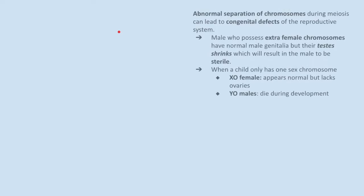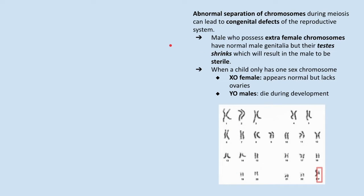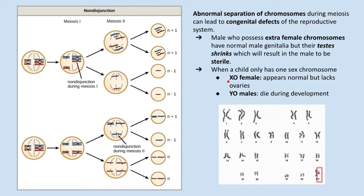Abnormal separation of chromosomes during meiosis can lead to congenital disabilities of the reproductive system. For example, males who possess extra female chromosomes have normal male genitalia, but their testes undergo atrophy — or in layman's terms, their testes will shrink — which causes them to be sterile. Other abnormalities also occur when a person only has one sex chromosome. Normally, people get the X chromosome and the Y chromosome for males, and two X chromosomes for females.